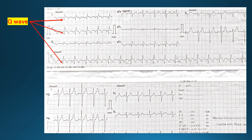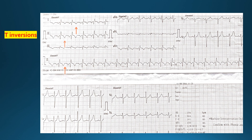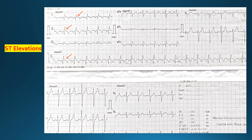Moving on, we can see that there are also T wave inversions. These T wave inversions are symmetrical, and again they are seen in the same leads showing Q waves. Now ST elevations are also present, but they are subtle. ST elevations should be picked up whenever they are present, even though they are subtle.